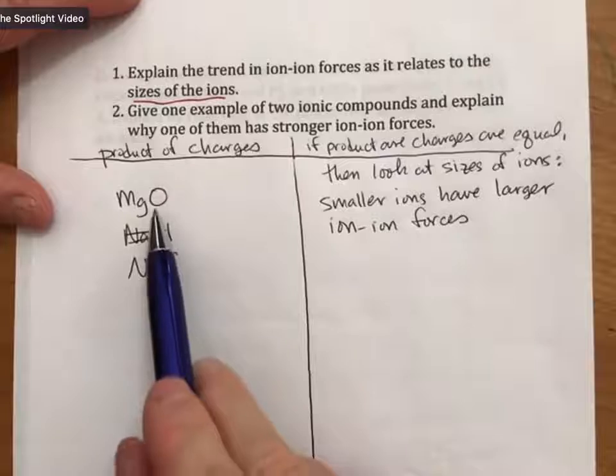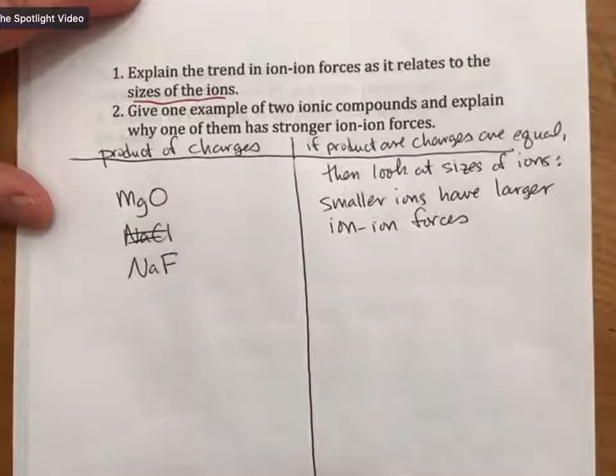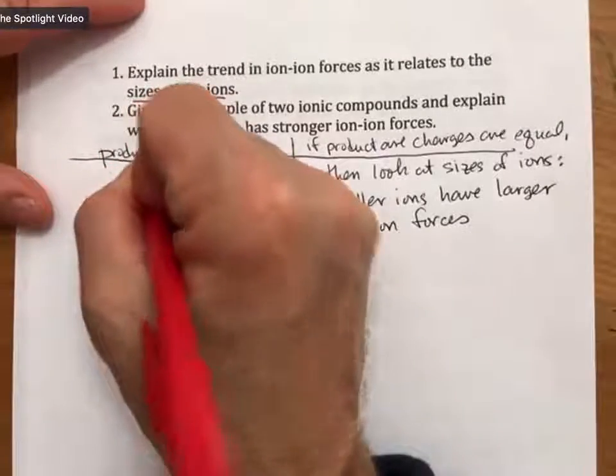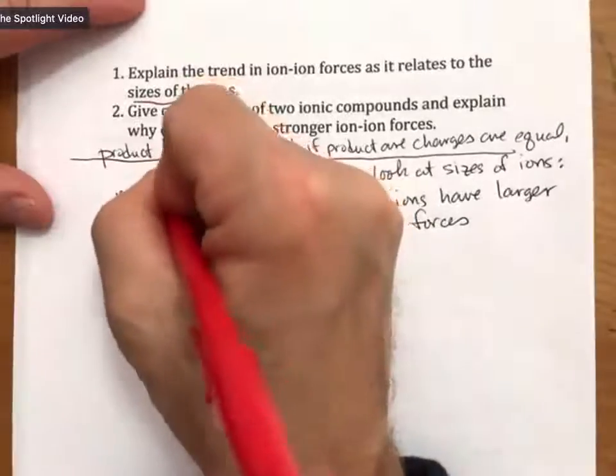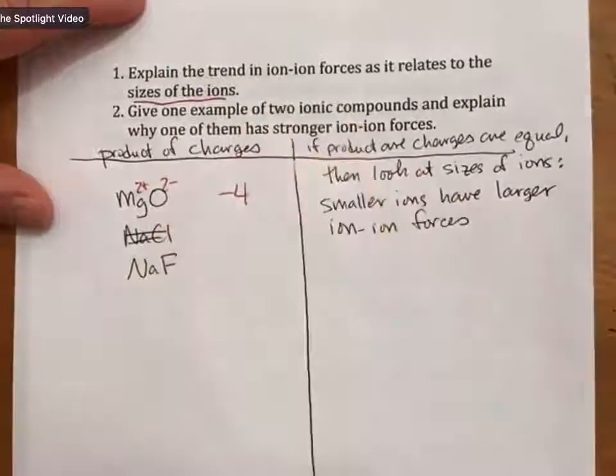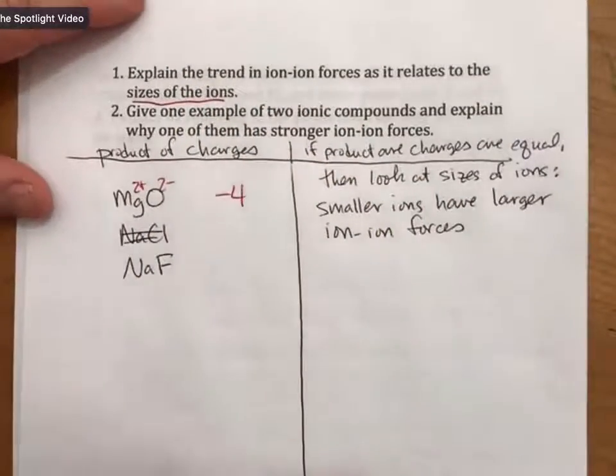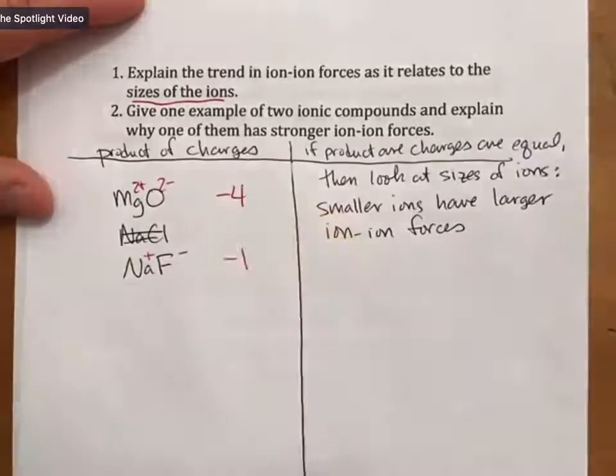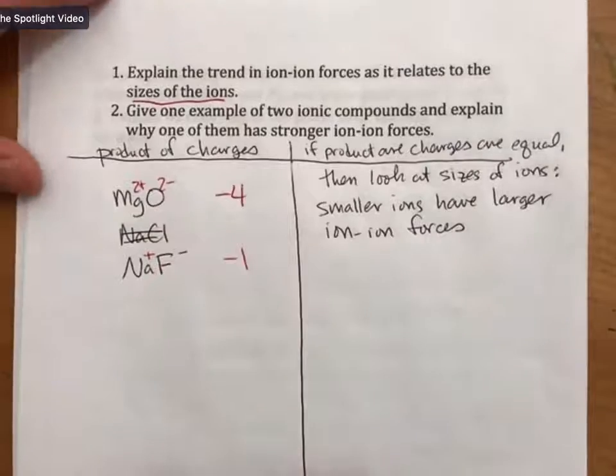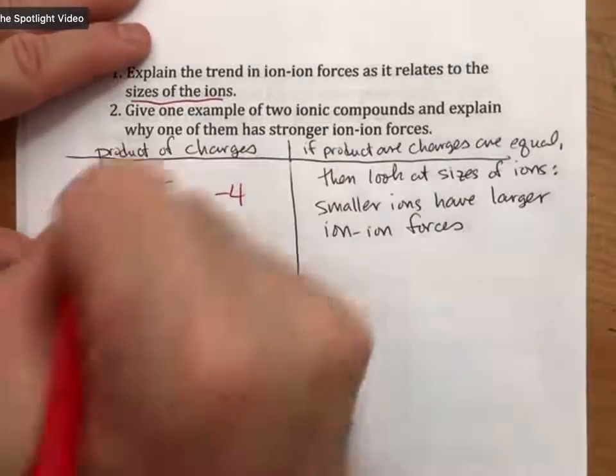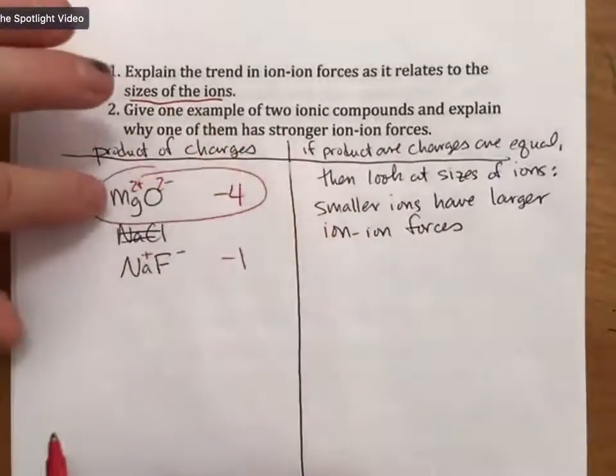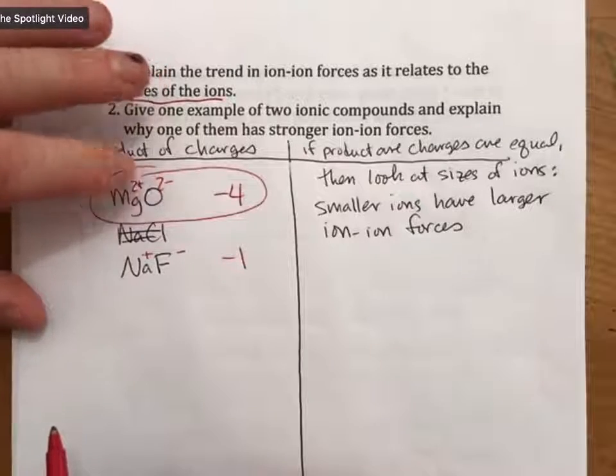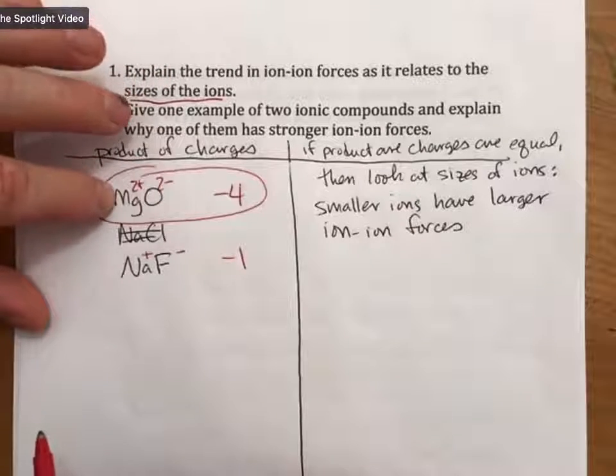And for these, if we look at the product of charges, magnesium is two plus, oxide is two minus, that's going to be a minus four. Here we have plus one minus one. That's just minus one.